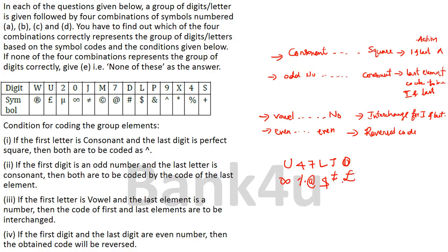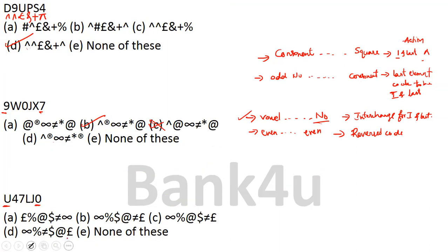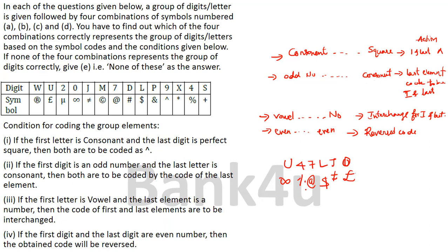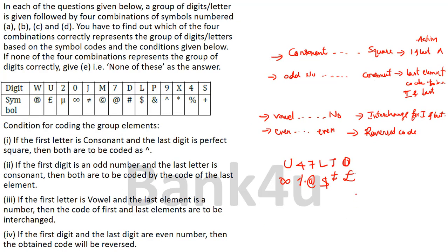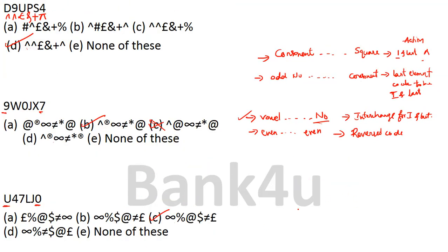So the final code for U47LJO is: infinity, percentage, at-the-rate, dollar, not-equal-to, pound. Therefore Option C is the answer.